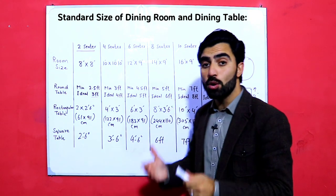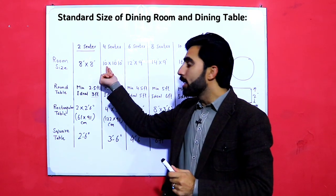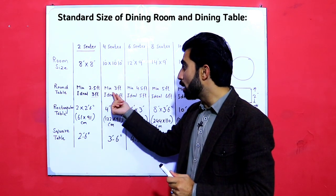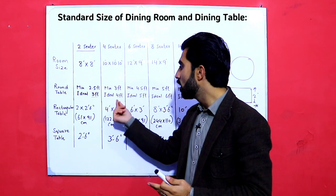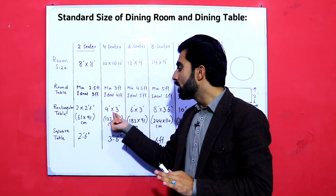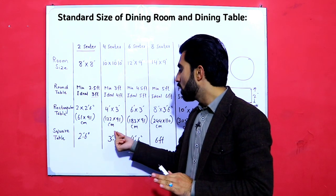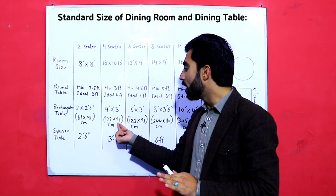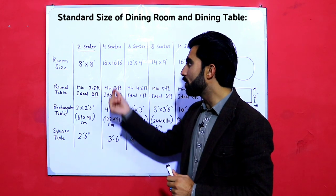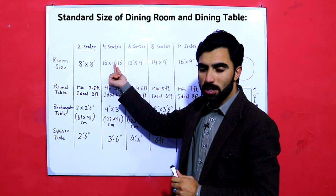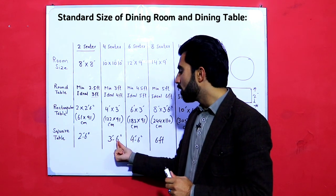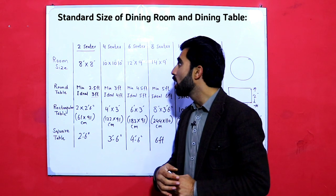For four sitters, the dining room size should be ten feet by ten feet. The minimum round table size should be three feet and the ideal is four feet. For a rectangular table, the size is four by three feet, or 122 by 91 centimeters. For a square table with four sitters in a ten by ten feet room, it should be three point five feet, or three feet six inches.